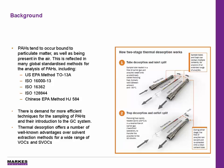Thermal desorption offers a number of well-known advantages over solvent extraction for a wide range of VOCs and SVOCs. The major advantage is the great improvement in sensitivity due to the avoidance of dilution, the high extraction efficiency, and the efficient transfer and injection to the GC. This sensitivity advantage means that the thousand-plus litre sample volumes and large sampling flows traditionally required can be substantially reduced, simplifying the sampling process. Thermal desorption also interfaces with the same type of GCMS instrumentation widely used for standard VOC monitoring, such as benzene in ambient air.